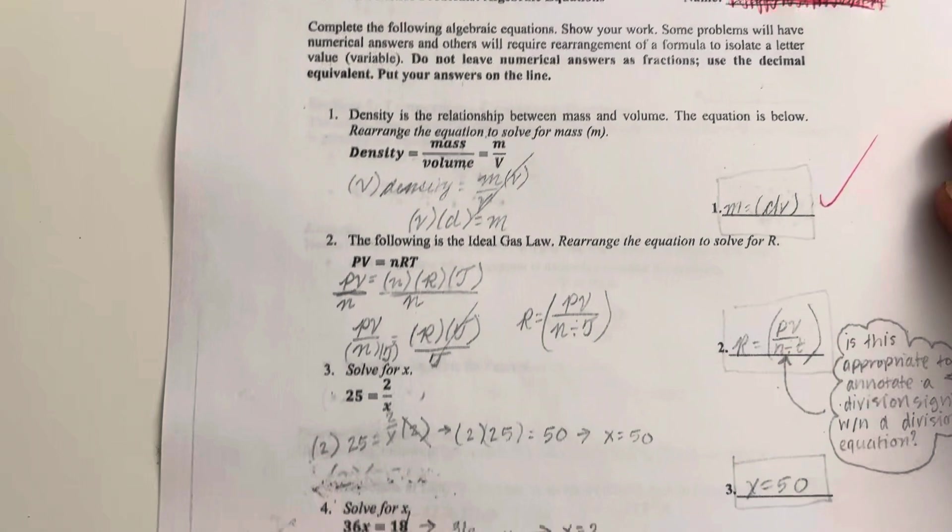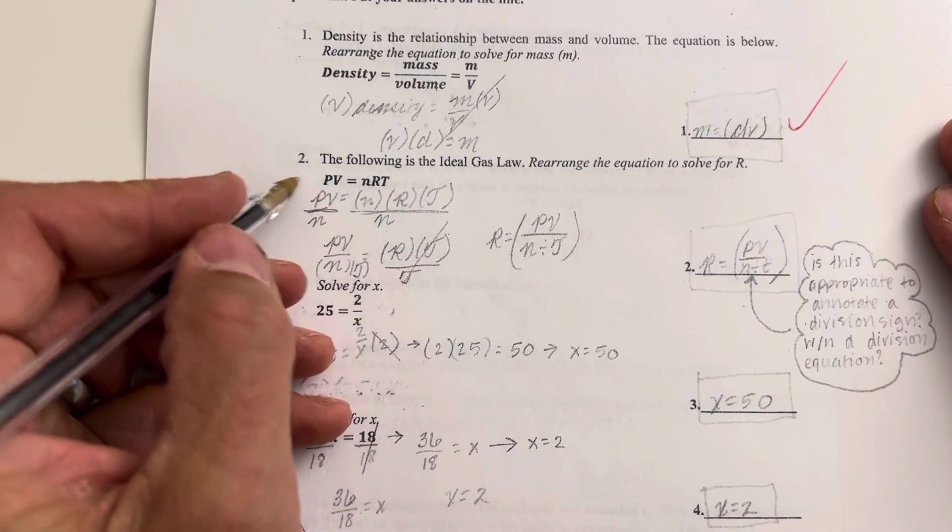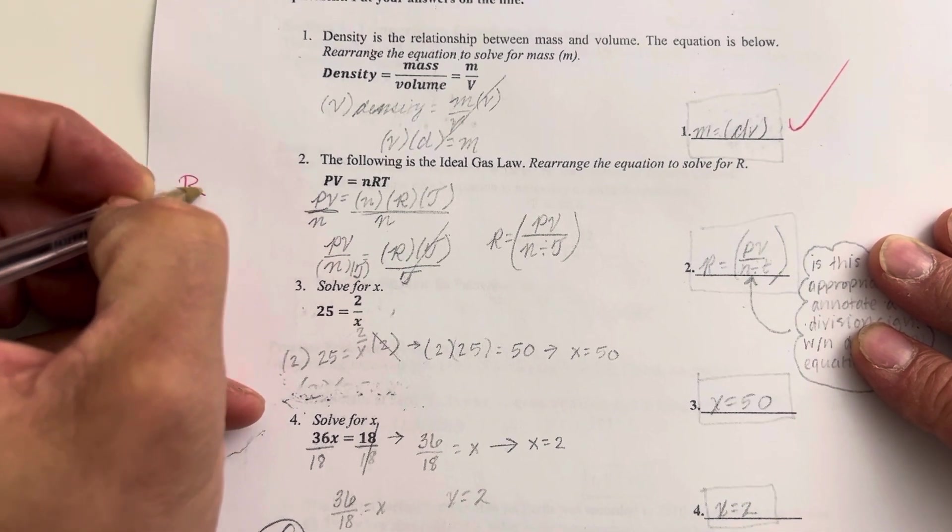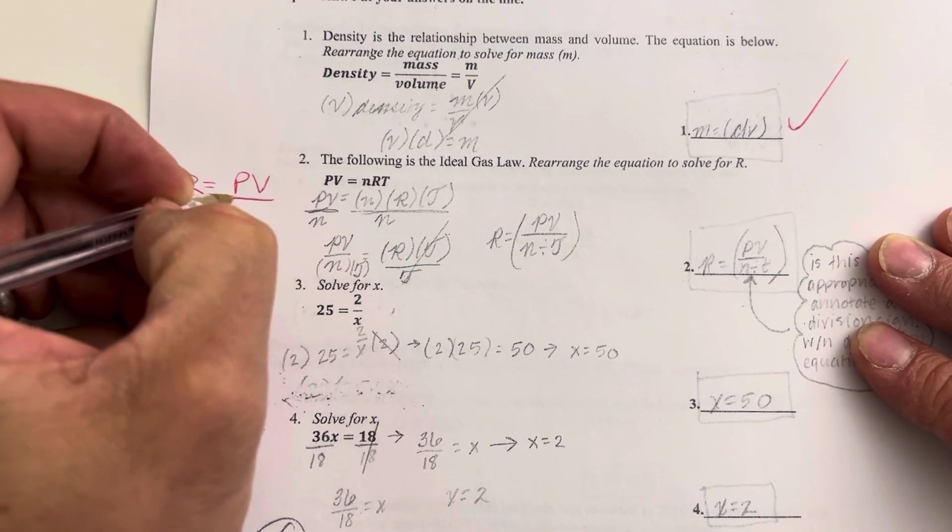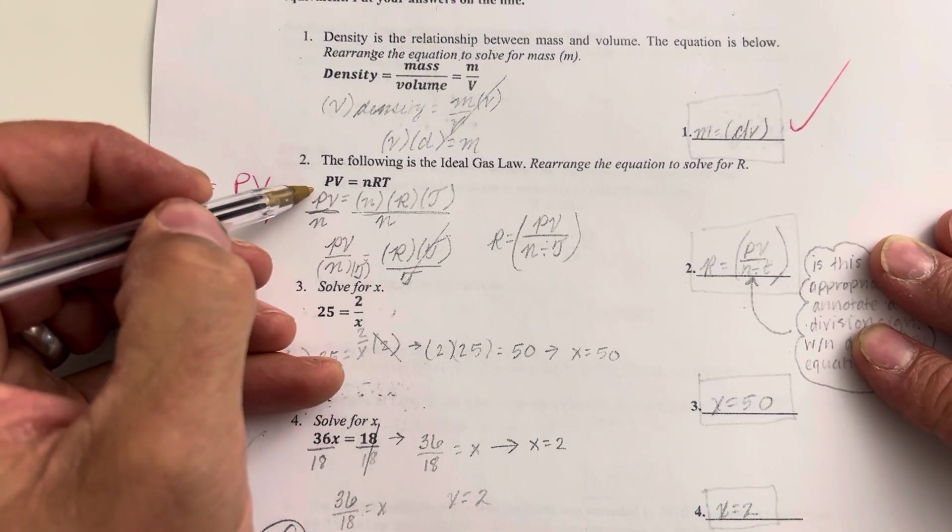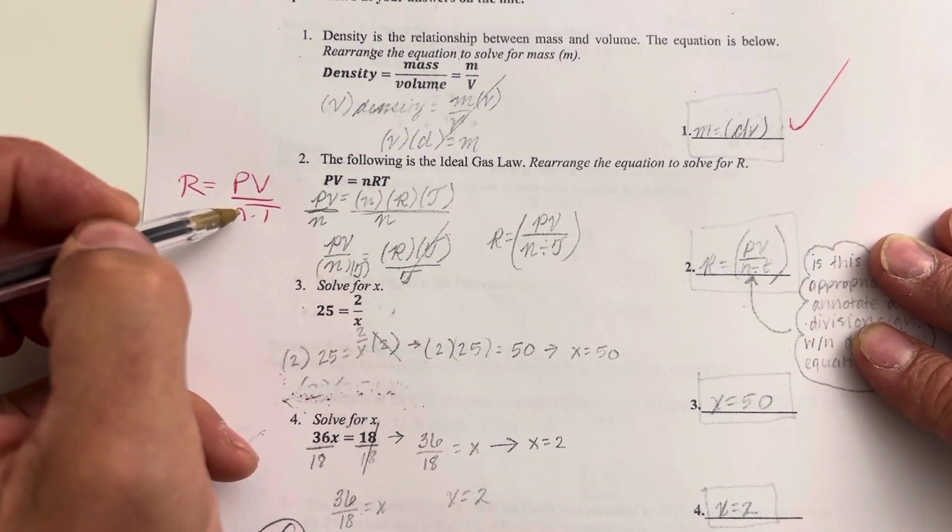For the next one, you are asked to rearrange the ideal gas law, PV is equal to nRT. When we solve for R, we get R is equal to PV over n times T. So you divided by n, which is correct,